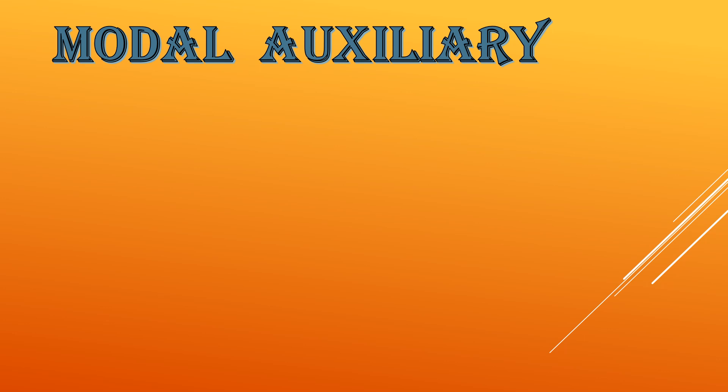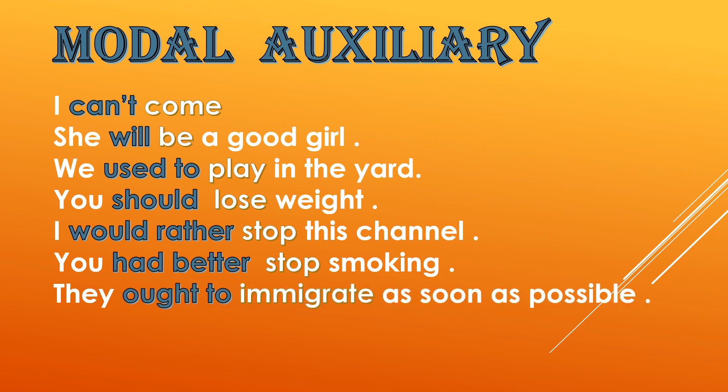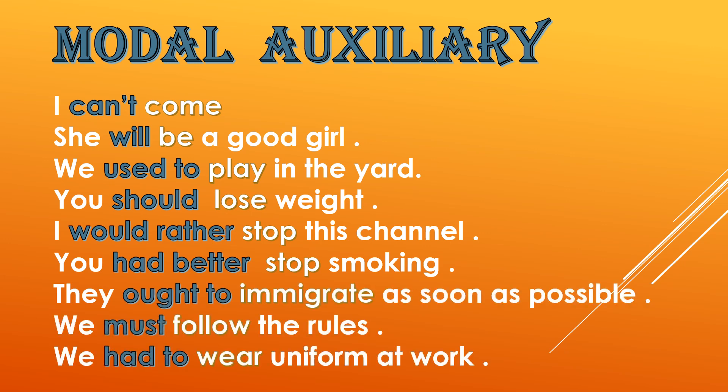Modal auxiliaries — در واقع جایی دیگه‌ای که فعلتون نه 'to' می‌گیره نه '-ing' می‌گیره modal auxiliaries هستش؛ یعنی فعل‌های کمکی. یکی از مشخصه‌های بارز modal auxiliary اینه که فعل با‌هاشون base form میاد. مثال: 'I can't come.' 'She will be a good girl.' 'We used to play in the yard.' 'You should lose weight.' 'They ought to immigrate as soon as possible.' 'We must follow the rules.' 'We had to wear uniform at work.'